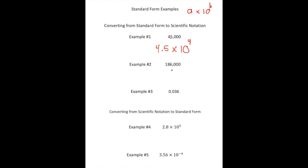Example number two: we have 186,000. The a value is 1.86. The decimal starts after the 1, and we move over one, two, three, four, five spots. Every time we move the decimal one spot, we multiply by 10, so that's 1.86 times 10 to the fifth power.